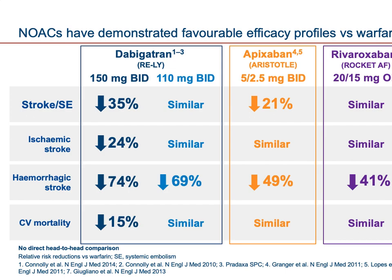Beyond major bleeding, less common side effects include ischemic stroke, hemorrhagic stroke, and cardiovascular mortality — because we're interested not only in treating patients but also in reducing mortality and morbidity. For dabigatran, the risk reduction is almost 35%, significantly higher than warfarin. For apixaban, it is around 21%, showing a significant difference favoring dabigatran for both ischemic and hemorrhagic stroke.